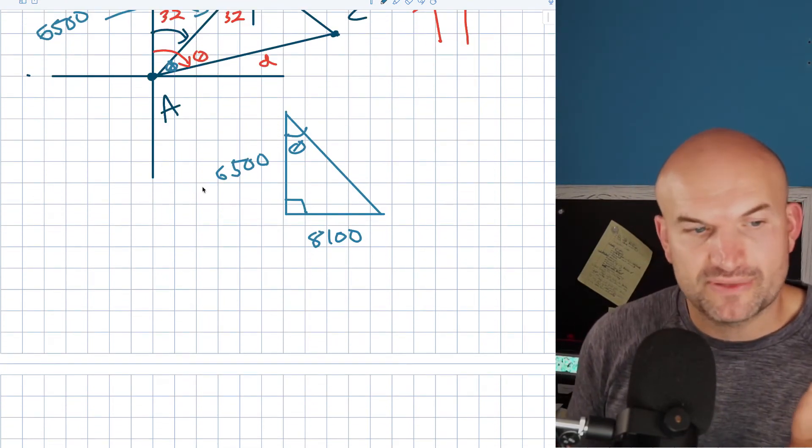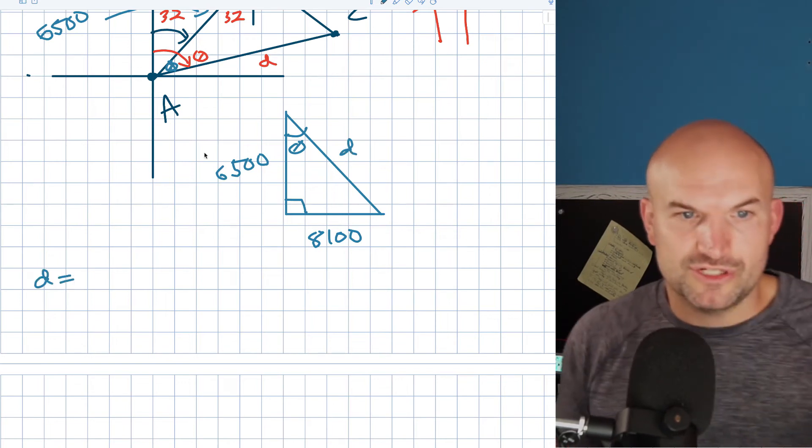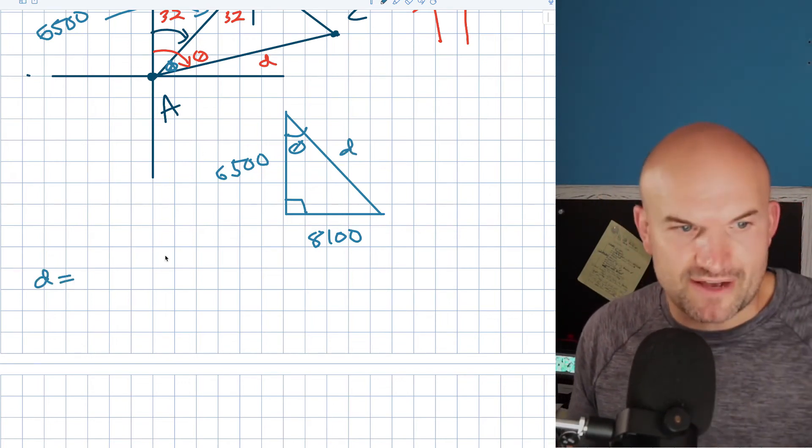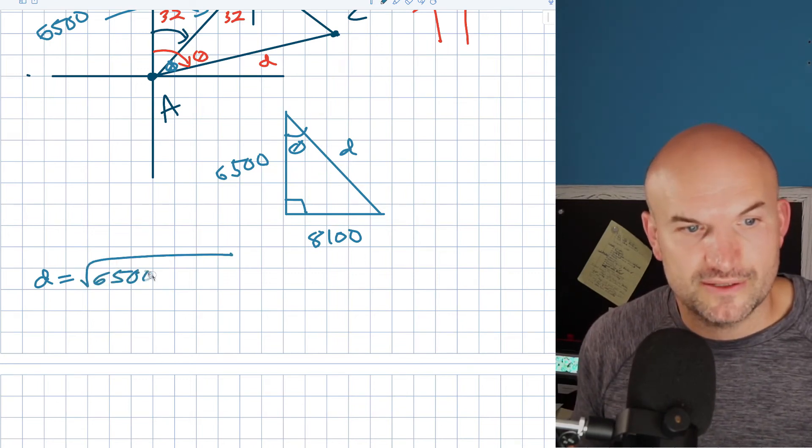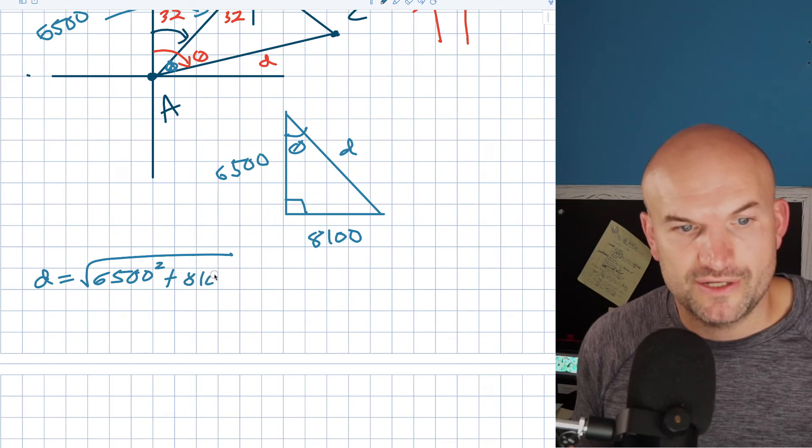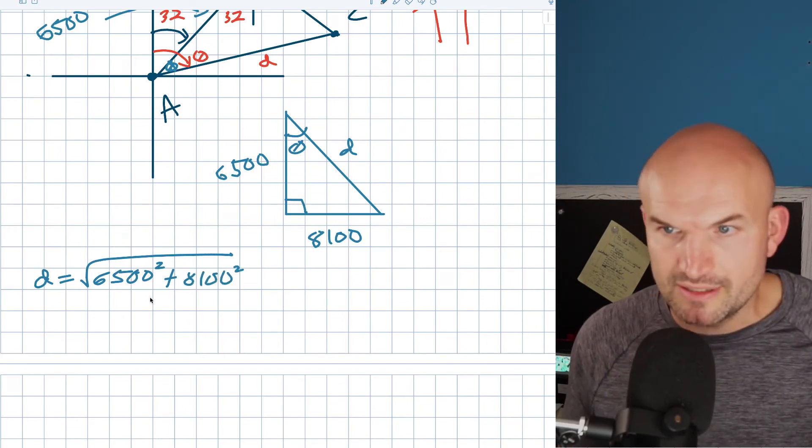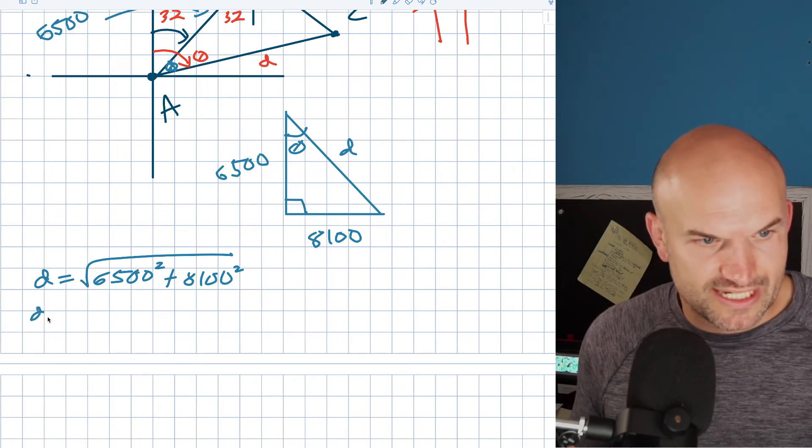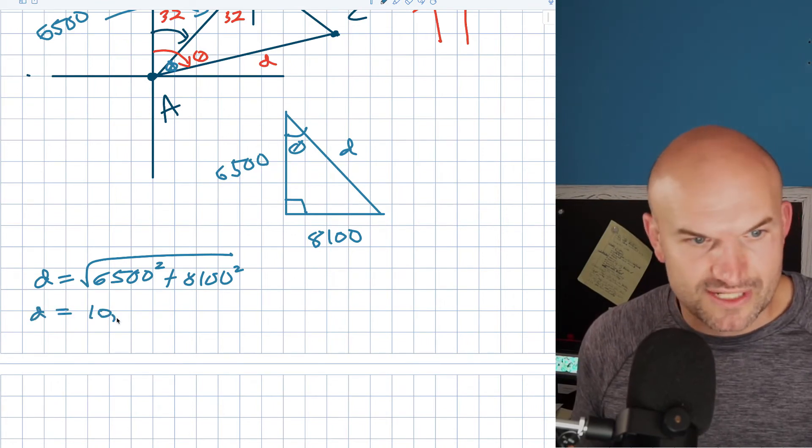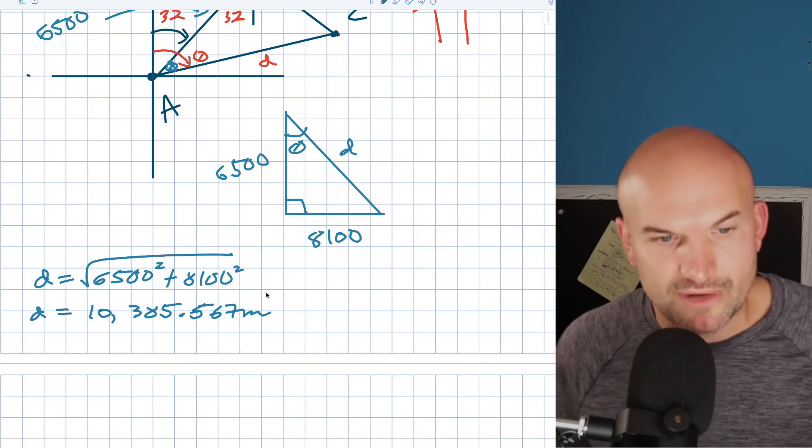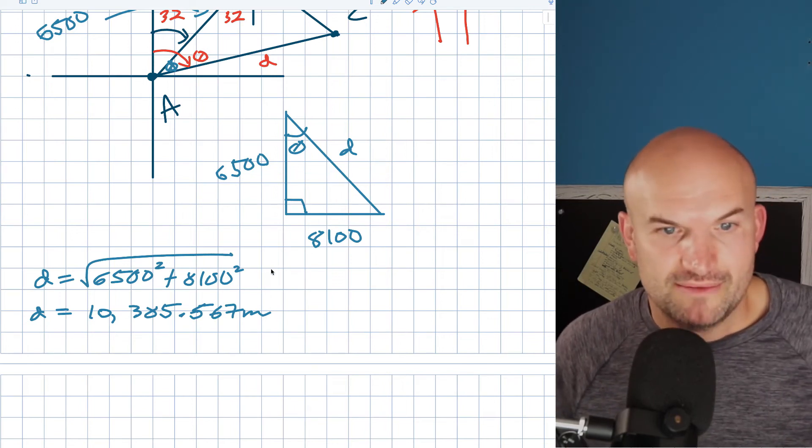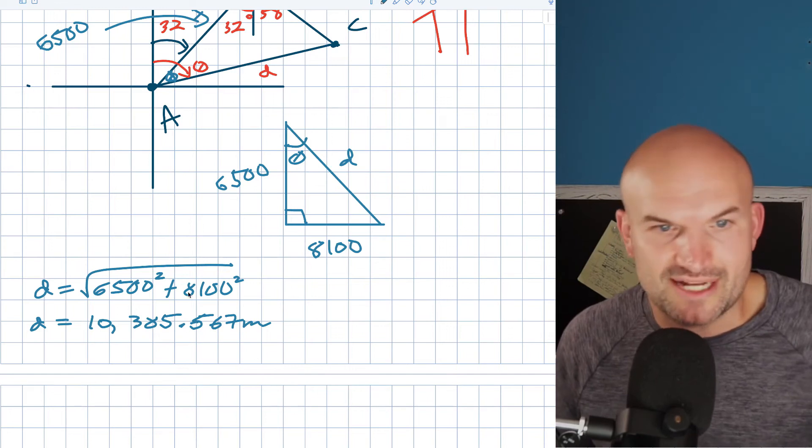So first thing we need to do is the Pythagorean theorem to find our D. So D squared equals 6,500 squared plus 8,100 squared. So just go ahead and type that into your calculator. And you should get D equals 10,385.567, depending on how you want to approximate that. Which again makes sense, right? Because if that's 6,000 and 8,000, that should be 10,000. Hypotenuse should be bigger.